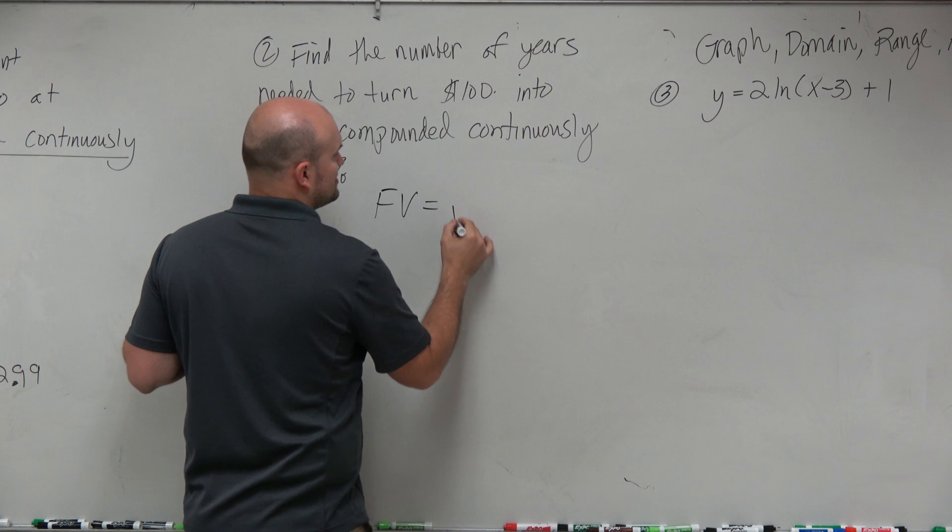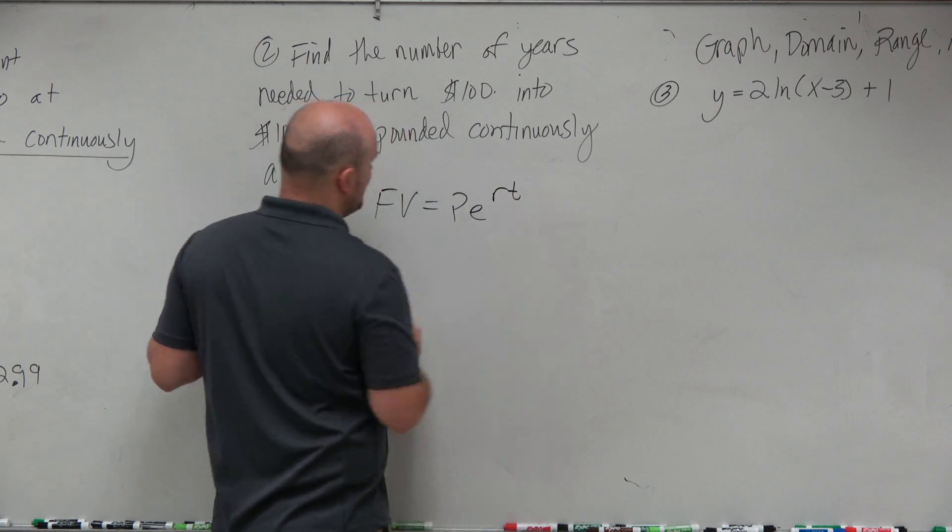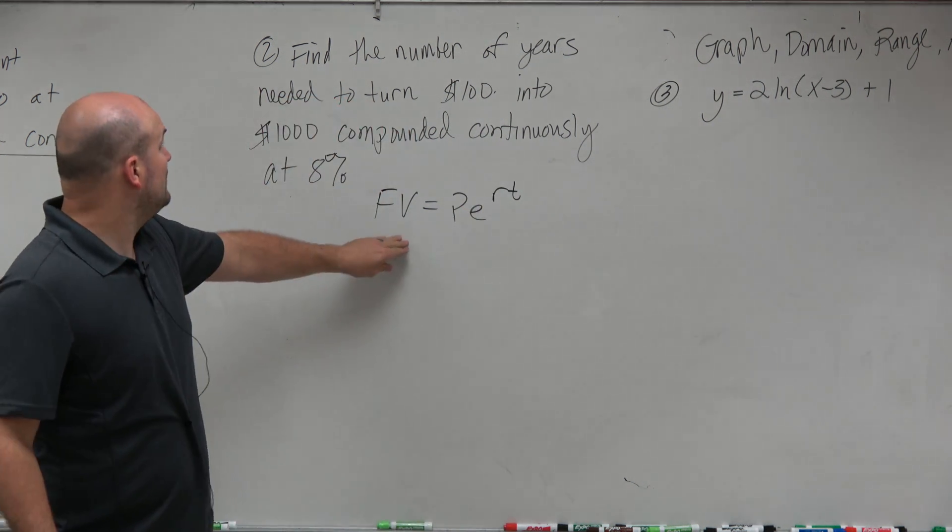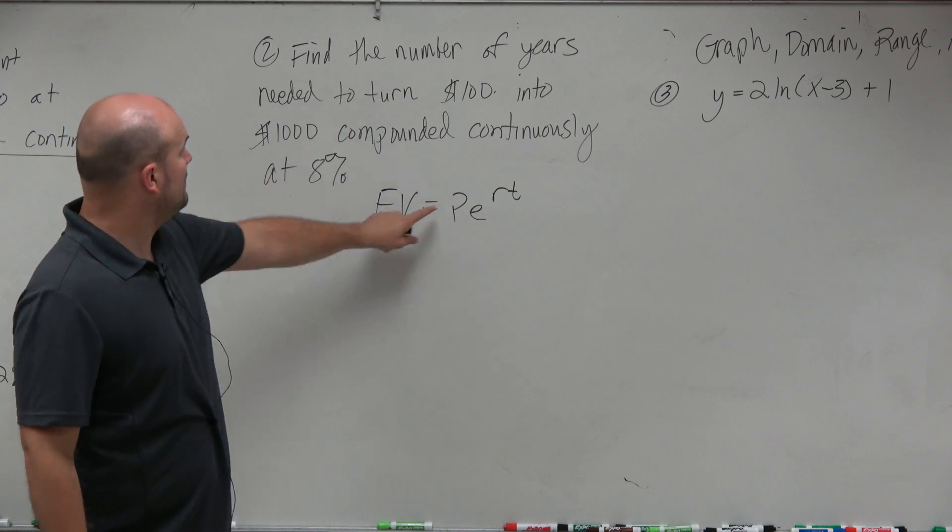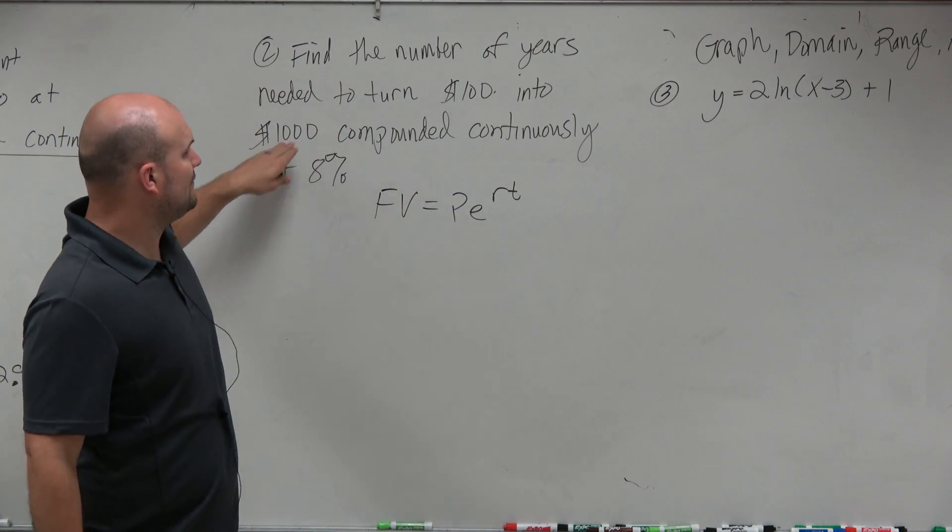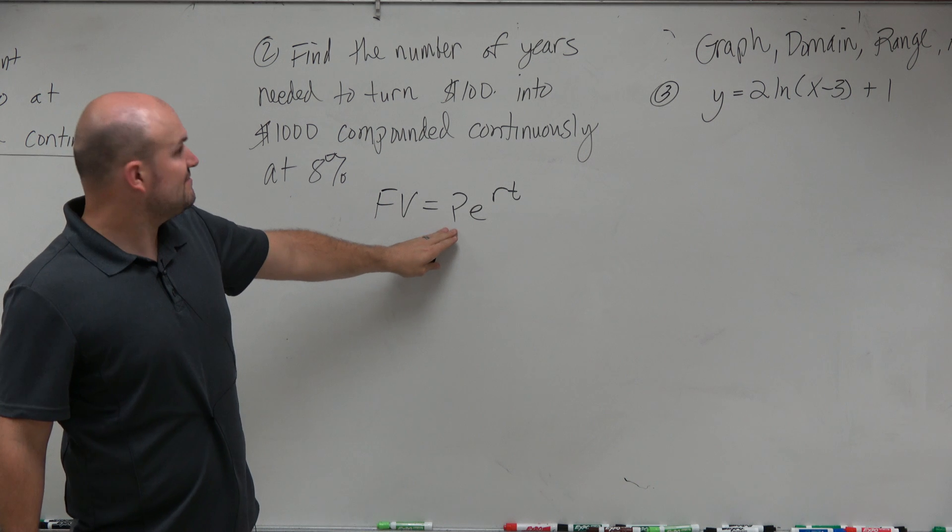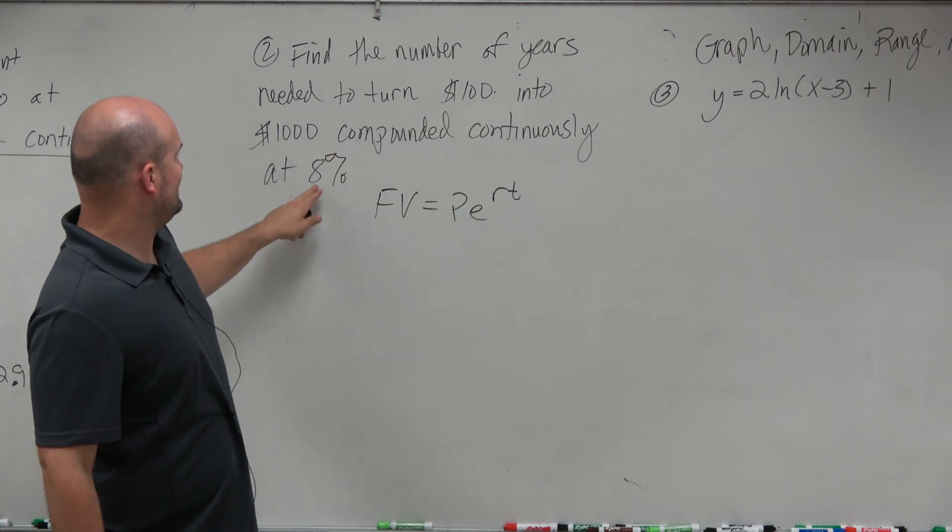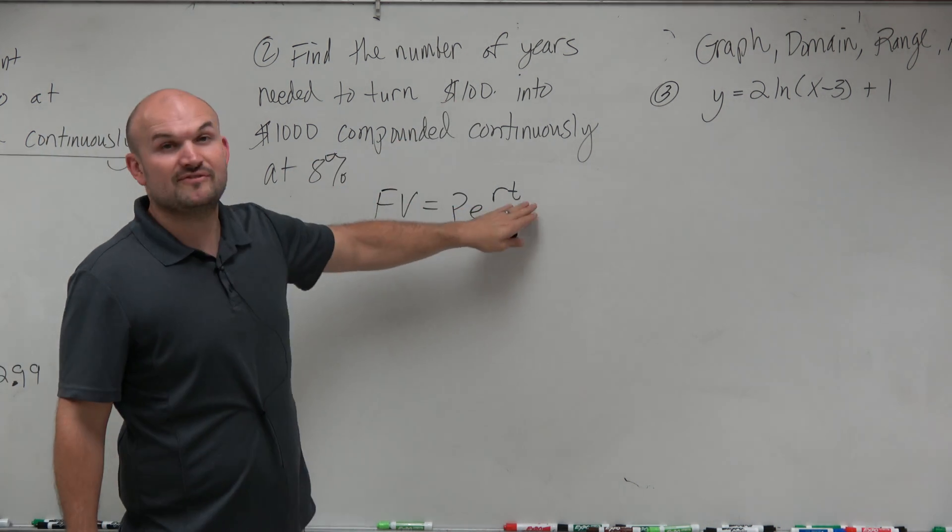So that's FV equals P times E to the RT, where FV is your future value. That is what we're looking for. No, sorry. No, our future value is 1,000. P is our present value, which is going to be 100. Our rate is going to be 8%, and then we want to figure out what time is.